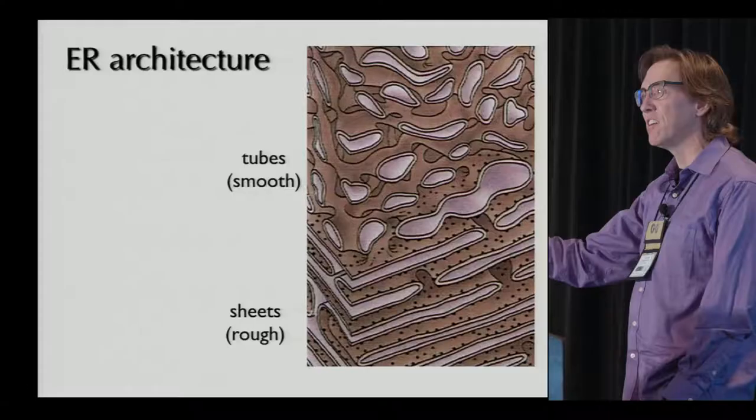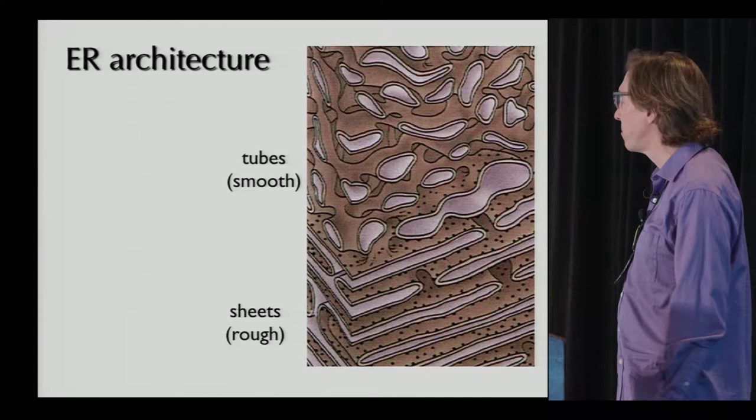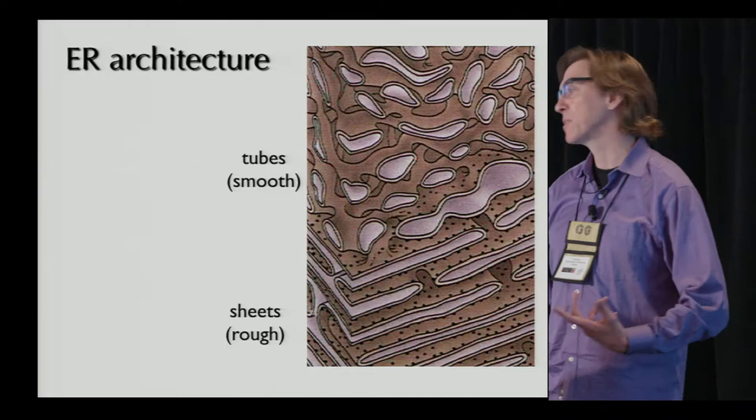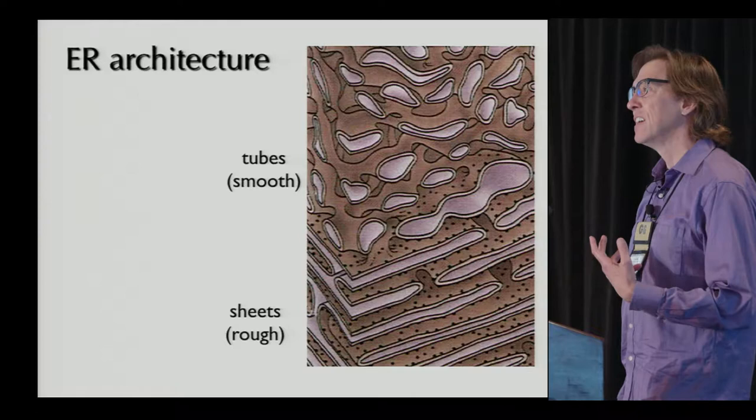Eukaryotes are more advanced cells than bacteria, and certainly more advanced in a certain sense than viruses. All of your cells are eukaryotic cells. All of your cells have a gigantic membrane organelle inside of them called the endoplasmic reticulum. It's often called the ER because biologists don't want to say endoplasmic reticulum over and over again. But the basic structure of this is very complicated.